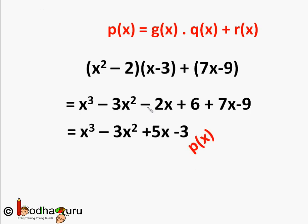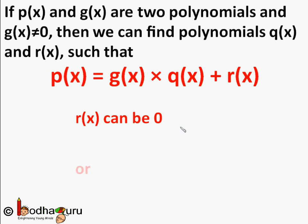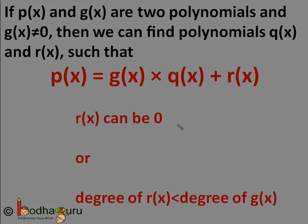So p(x) equals g(x) times q(x) plus r(x) holds true. We can conclude: if p(x) and g(x) are two polynomials and g(x) is not equal to 0, then we can find polynomials q(x) and r(x) such that p(x) equals g(x) times q(x) plus r(x), where r(x) can be 0 or the degree of r(x) is less than the degree of g(x). This is known as the Division Algorithm for Polynomials. That's all for now, bye bye.